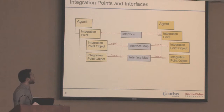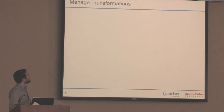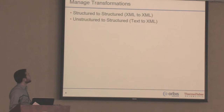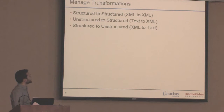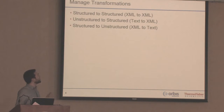What kind of transformations can we do and how can we do it? We have three different types of transforms: structured to unstructured, unstructured to structured, and structured to structured. Unstructured generally refers to text, CSV, or RTF, while a structured format would be XML.